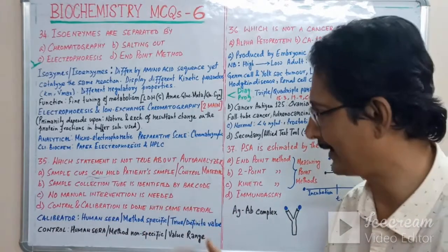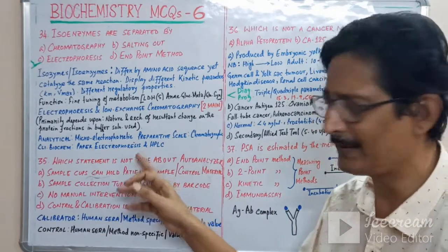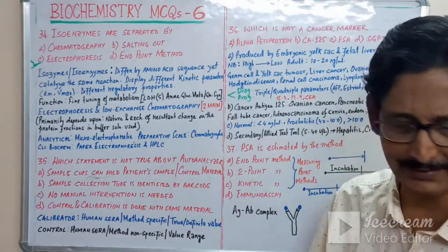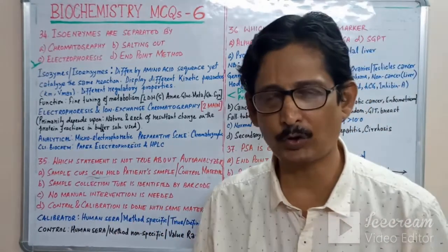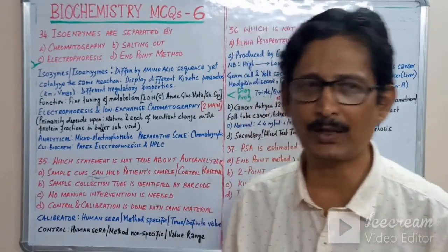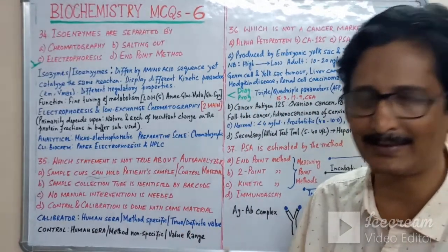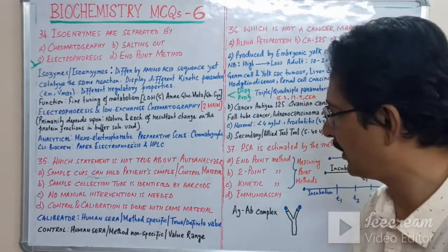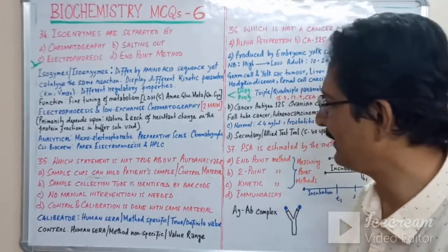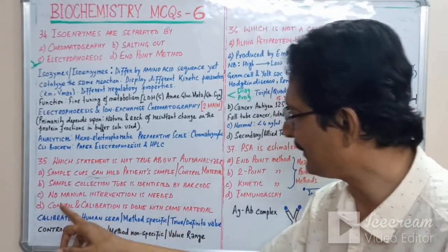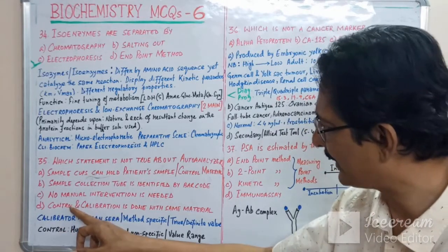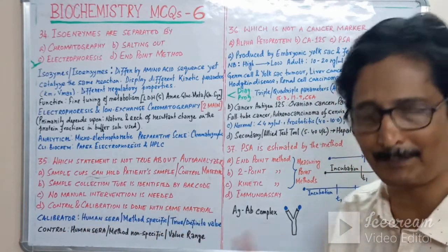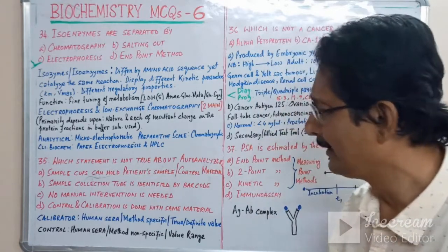Option C states that no manual intervention is needed — which is obviously true since it is an auto analyzer. Option D states that control and calibrator are done with the same material. To evaluate this, we need to understand what a calibrator is.